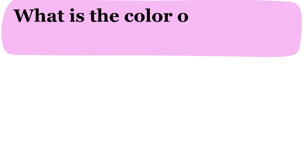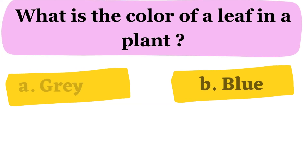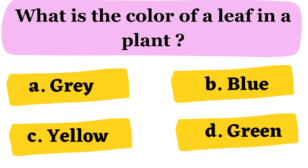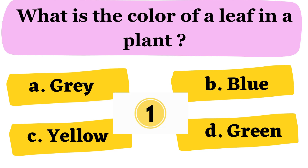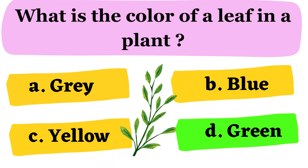What is the color of a leaf in a plant? A. Gray B. Blue C. Yellow D. Green. The correct answer is option D.